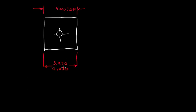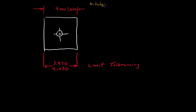What is he saying here? He's saying the length of this block is still nominally four inches — four inches would be the mean, the center between these two values — but he's displaying it by showing us the upper and lower limit. That is in fact called limit tolerancing. So we have bilateral tolerancing up above, and here we have limit tolerancing.